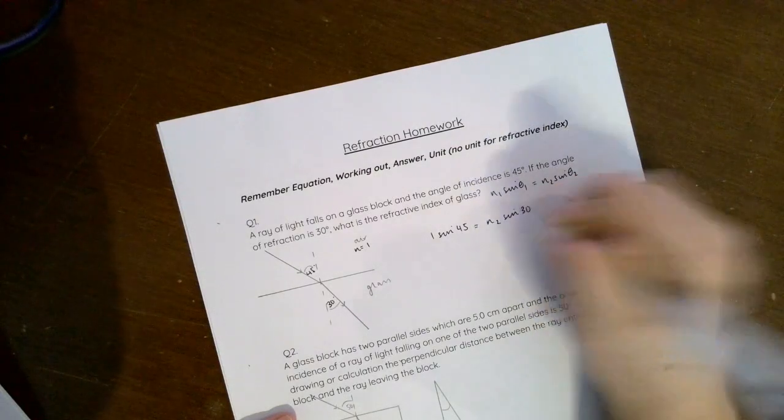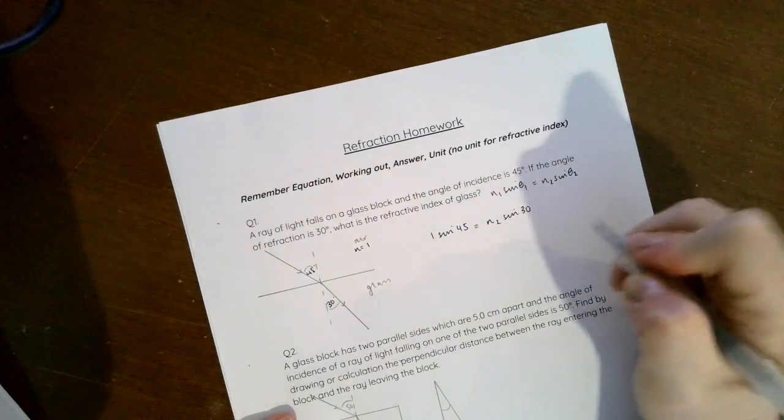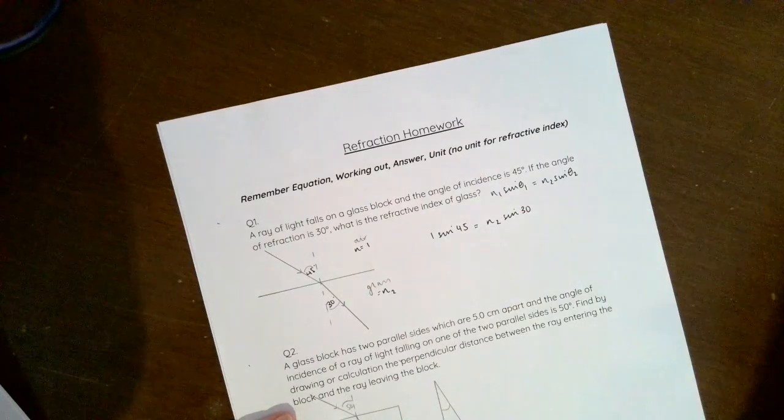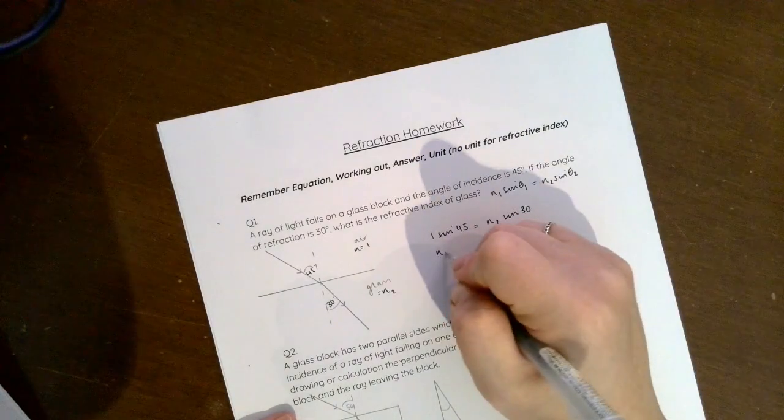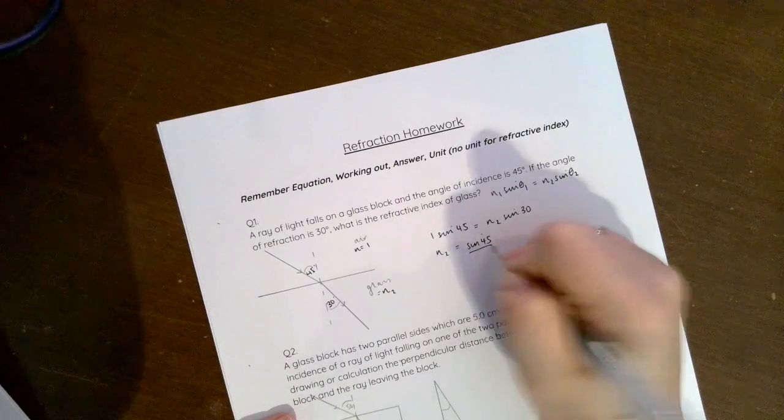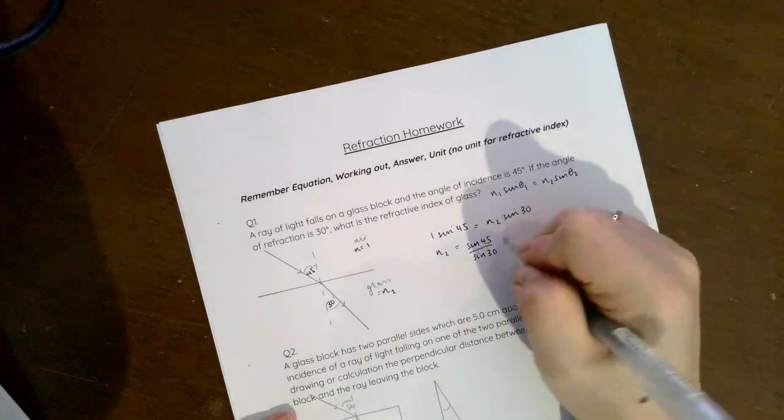Must be equal to n₂, which is what we're trying to work out, multiplied by sin 30, which is θ₂. So n₂ is the n of glass and that's what we're trying to work out.